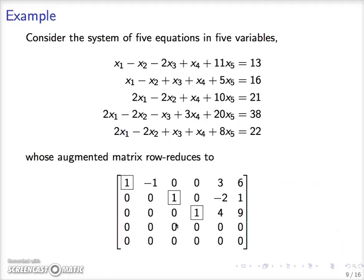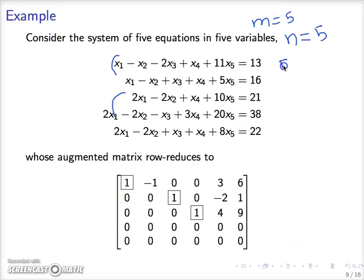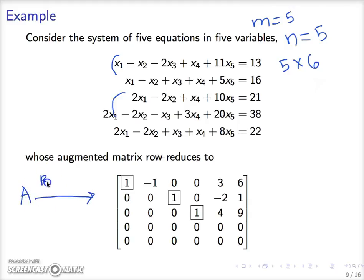Here we work another example. This example has five equations and the number of variables n is also five, so the augmented matrix will be five by six. At this point you should pause this lecture, write the system into matrix-vector form, form the augmented matrix, and apply the row operations. You should confirm by doing your own calculations that the augmented matrix has this RREF. The notation is: A is the augmented matrix, and with an arrow labeled RREF on top, we indicate that by applying row operations, A row reduces to this result.